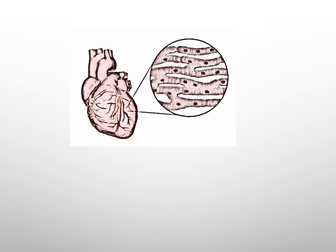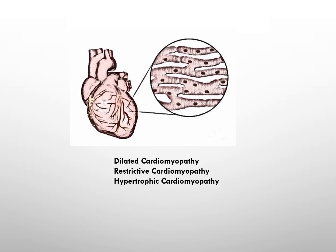Cardiomyopathy is a general term used to describe a group of diseases that affect the heart muscles. These conditions can lead to structural and functional abnormalities in the heart which can impair its ability to pump blood effectively, and these are divided into three: dilated cardiomyopathy, restrictive cardiomyopathy, and hypertrophic cardiomyopathy.